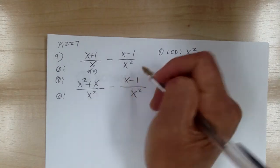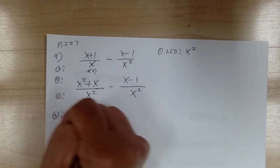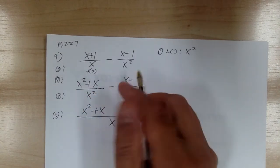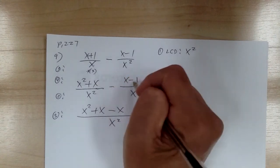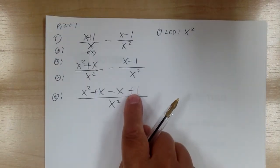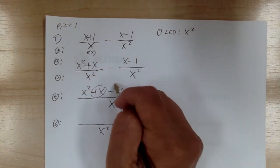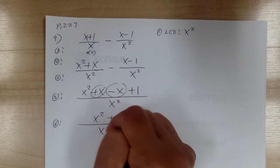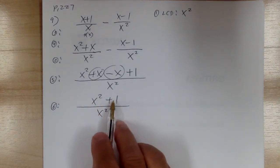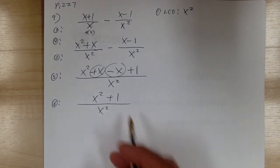The second fraction doesn't need anything. This is a subtraction, so you need to do an extra step — distribute the negative. So you get x squared plus x, minus x, then minus negative one becomes plus one. Combine like terms: the x and minus x cancel, so you get x squared plus one over x squared. Do not factor, and do not cancel the x squared because x squared plus one is a term — whenever you see addition or subtraction, those are terms.